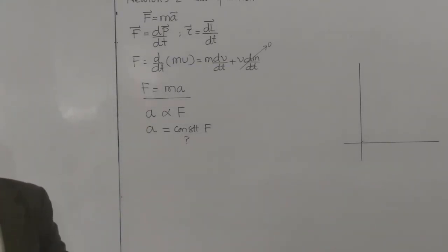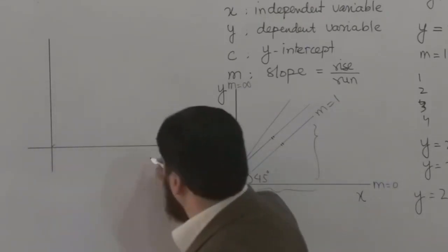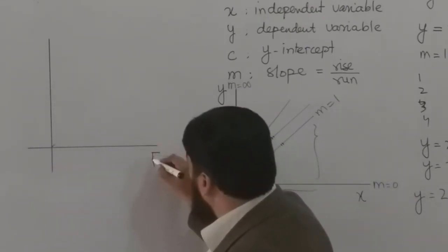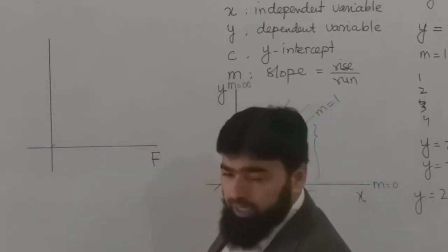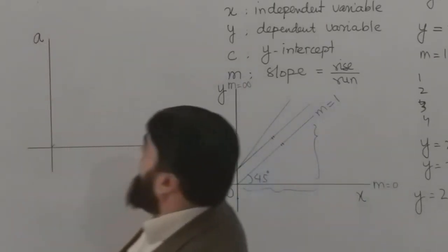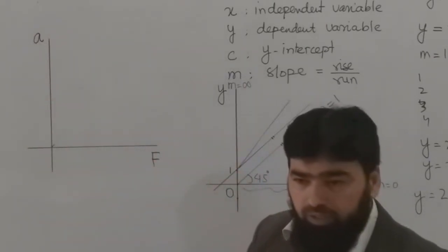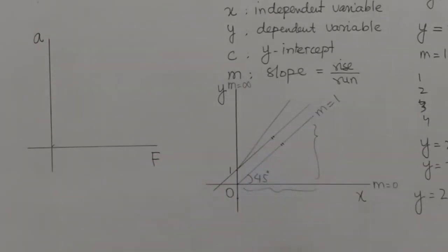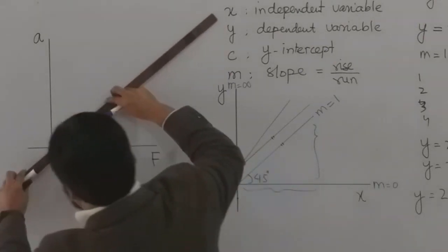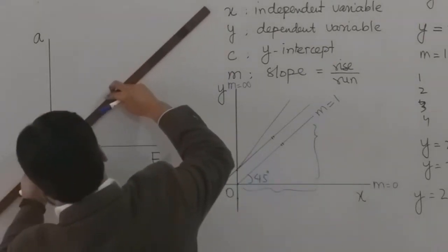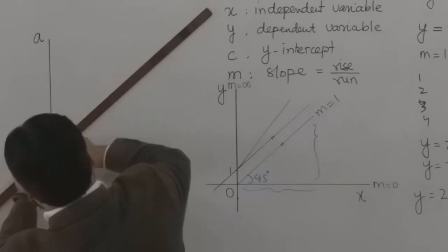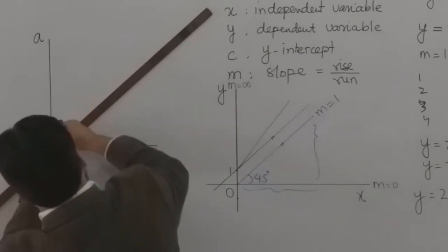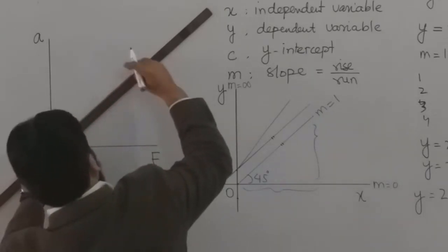Why? Means, why we will write this constant as 1 over M. So come back again here. This is your force, which is the independent one. And this is your acceleration, which is the dependent one. And let's say I now plot the linear response. Means the slope which is M equals 1. This one. This is slope M equals 0. This is slope M equals 1.